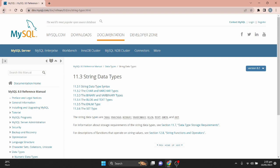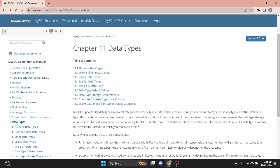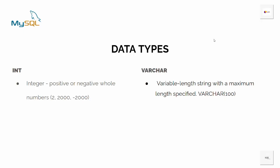There are lots of data types that MySQL supports. However, in order not to overwhelm ourselves, we are going to learn them in tiny bits. In today's lesson we will only consider INT and VARCHAR, because these are the two data types we need to create this table. INT covers positive or negative whole numbers; VARCHAR represents variable-length strings with a maximum length specified.